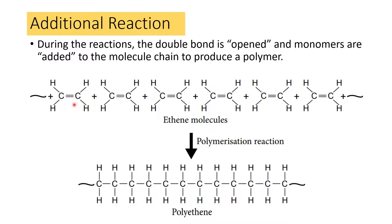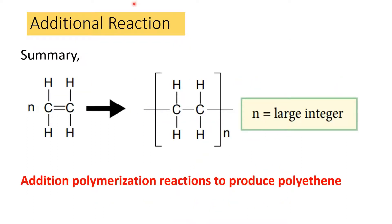Here we can see multiple ethene monomers, each with a double bond between two carbon atoms. Through the polymerization reaction, those double bonds become single bonds and the monomers join together to form a chain. The new substance is called polyethene. If you count every two carbons, that corresponds to one original monomer unit — so the number of repeat units equals the number of monomers used.